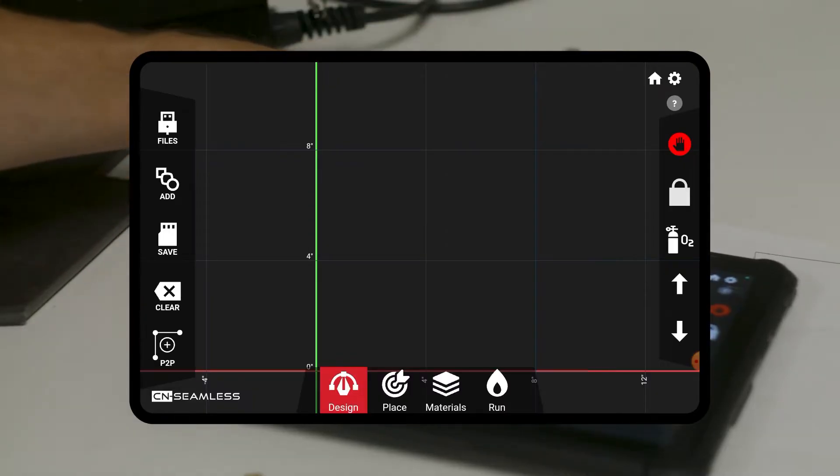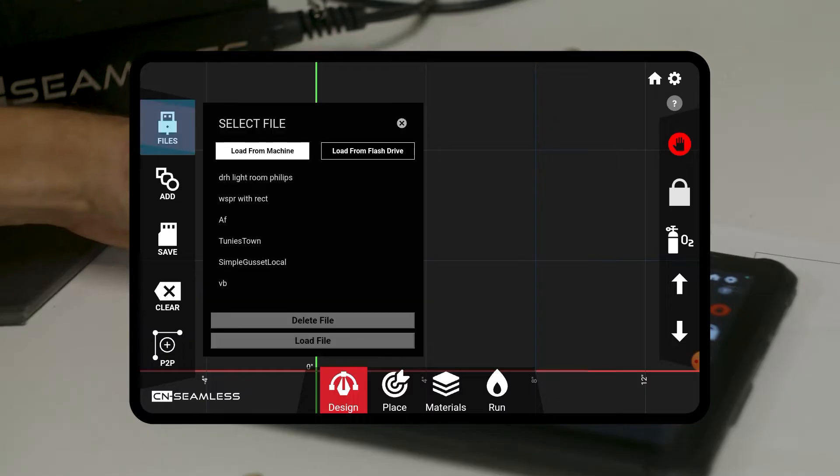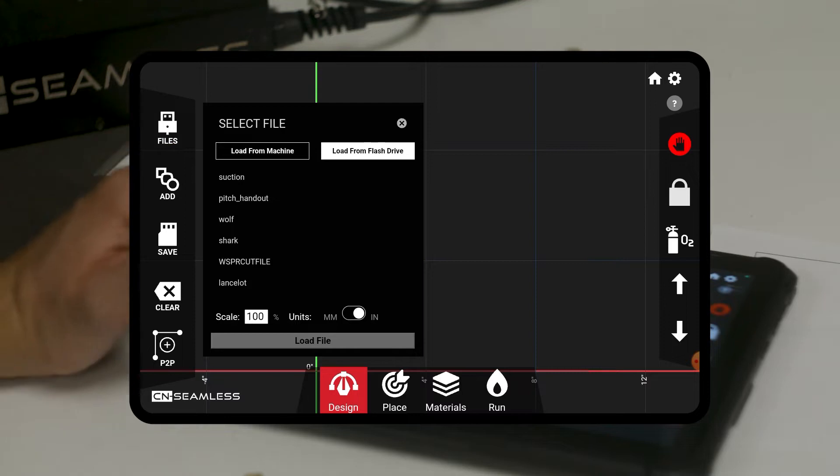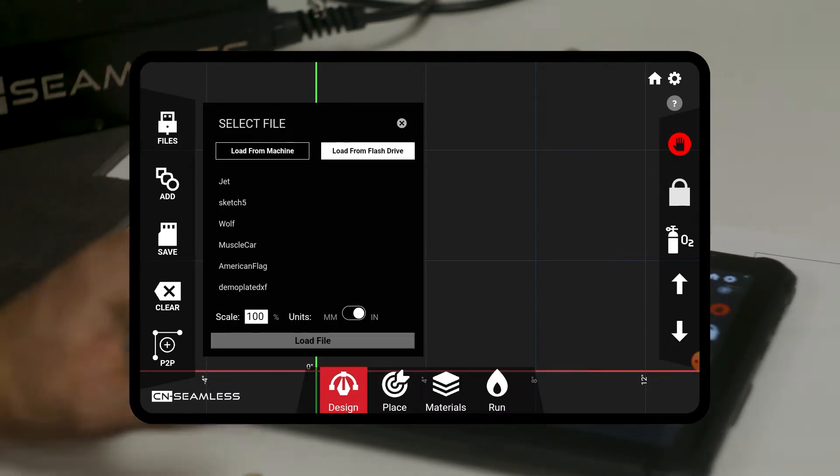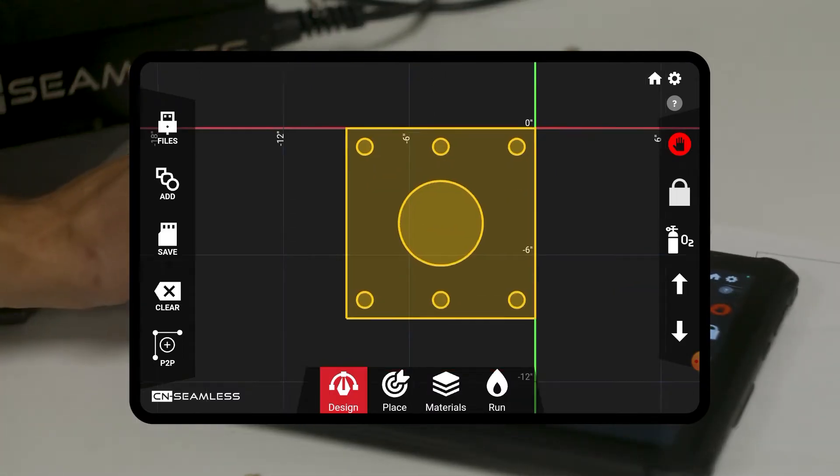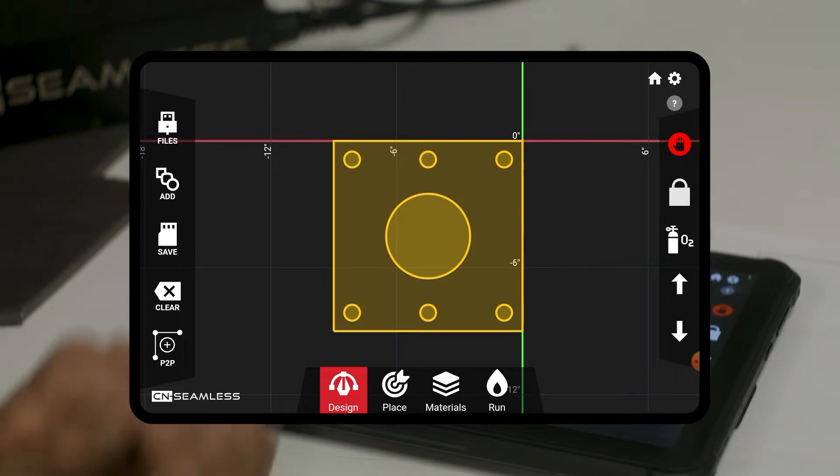This is going to be a little bit simpler. All we're going to have to do is click on files and then load from flash drive. And you just scroll down until you find the name of the shape you want to cut. So in this case, I saved this one as demo plate DXF. I'm going to click on that.